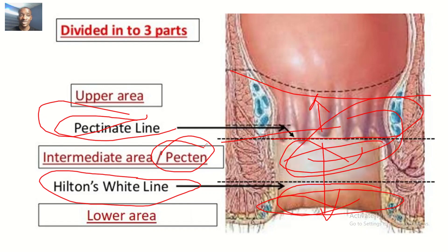So that covers the differences between the pectinate line and the white line of Hilton, also called Hilton's white line. That's it for this one — see you guys in the next one, bye.